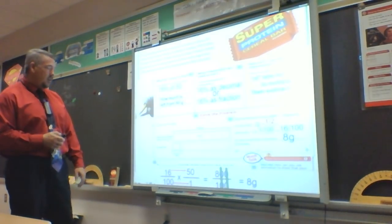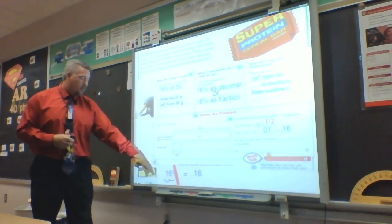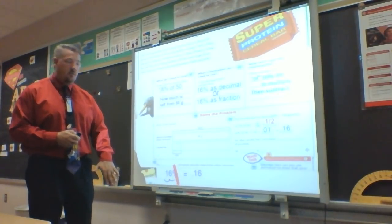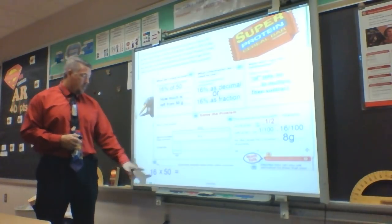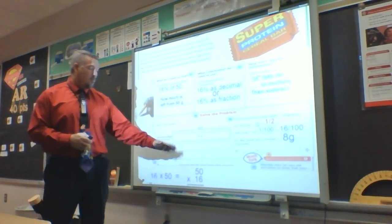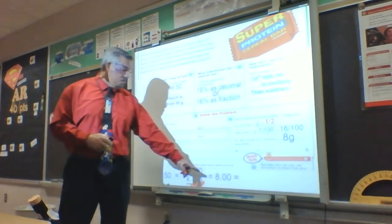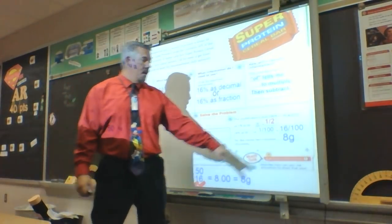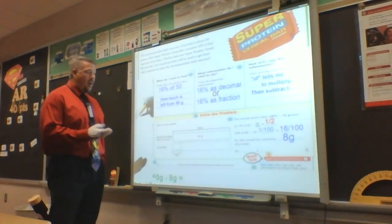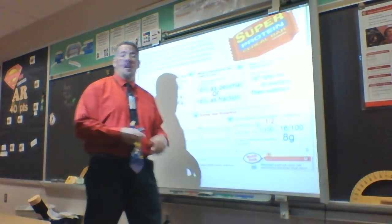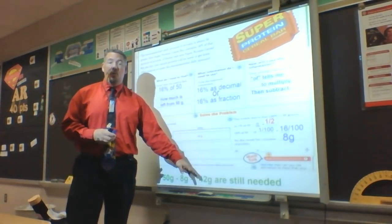Using the decimal method: I drop the percent sign, move the decimal from right to left two times, giving me 0.16. Then 0.16 times 50: when I stack and multiply, I get 800, but two decimal spaces means I move the decimal two times, giving me 8.00 — confirming 8 grams. Is that my final answer? No — I know I have 50 grams and 16% of that is 8 grams, so I subtract: 50 minus 8 tells me I still need 42 grams of protein.